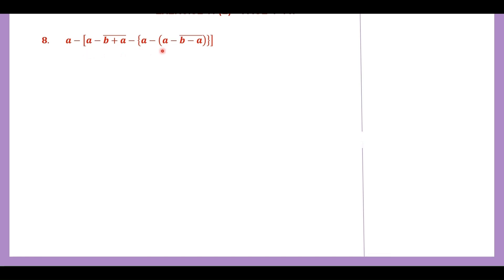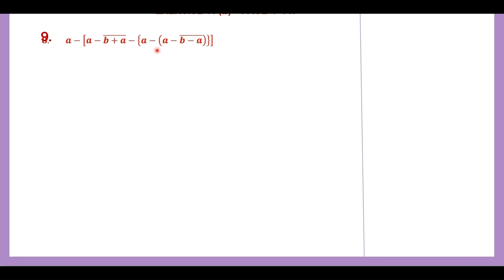What are the different brackets that we have here? We have the square bracket, the bar bracket, the curly bracket, and the parenthesis. So according to BODMAS, the order of brackets, we have to first remove the bar bracket. That means everything else remains the same, and when we remove brackets we have to see the sign before the bracket and accordingly do.